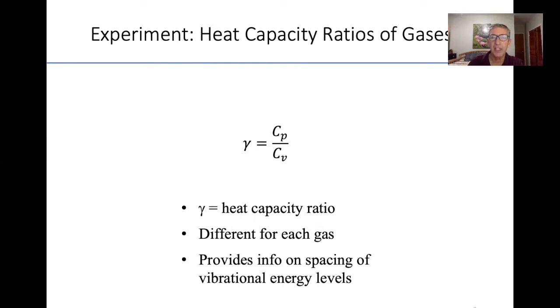One experiment is the heat capacity ratios of gases. The heat capacity is this Greek letter gamma, and it's the ratio of the constant pressure heat capacity to the constant volume heat capacity. It's in principle different for each gas. So you're going to do measurements on a couple of gases. It provides information on the spacing of vibrational energy levels. It tells you about the microstructure at the molecular level.